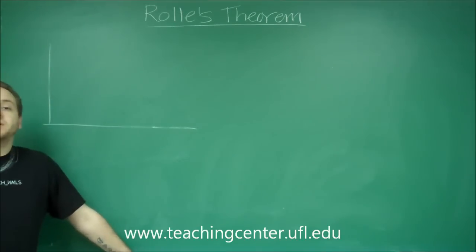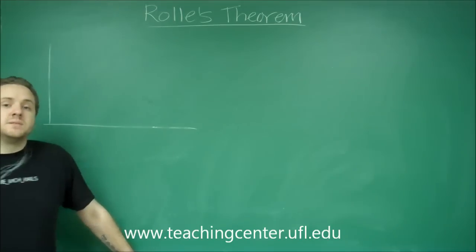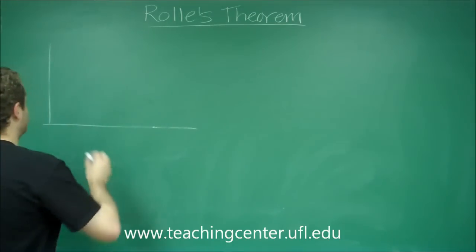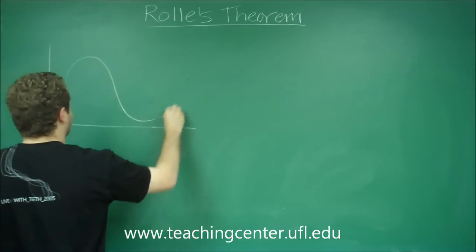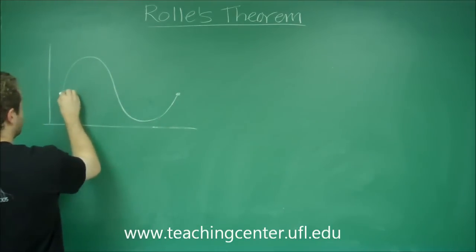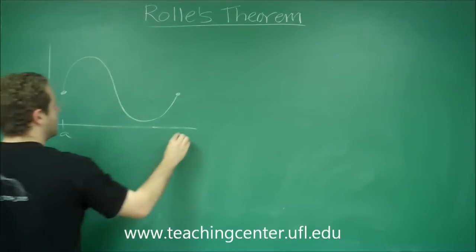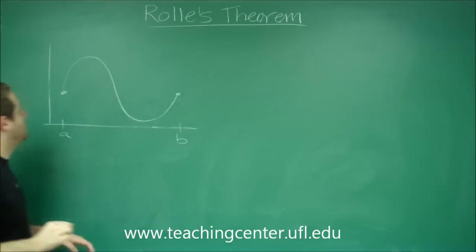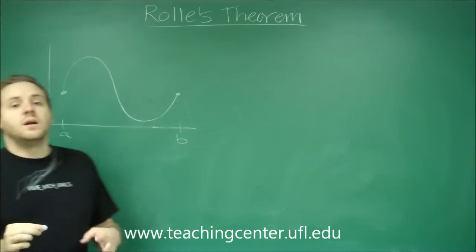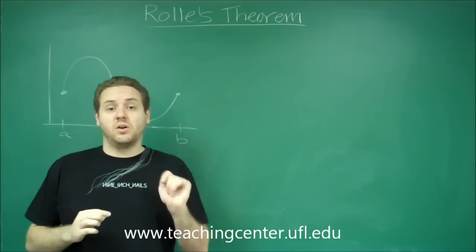So Rolle's Theorem has the same setup, except you're guaranteed for the theorem to work that the endpoints must be at the same y-value. So no matter what we have here, here's a, here's b. You can see that if we applied our mean value theorem and didn't call it Rolle's Theorem here,